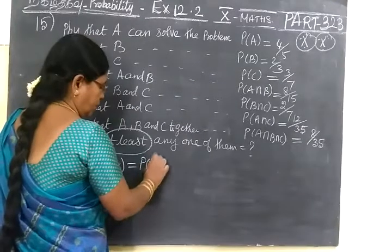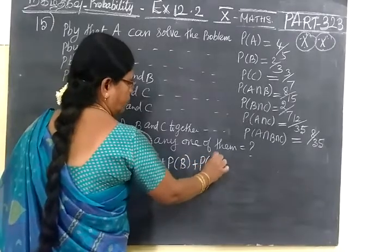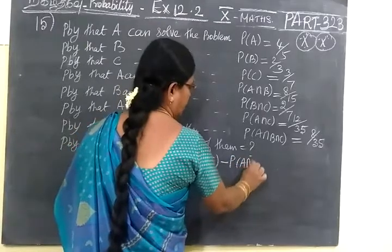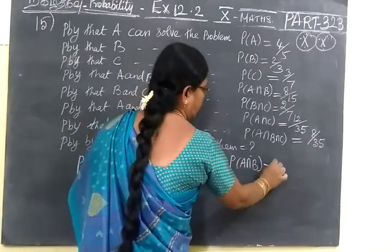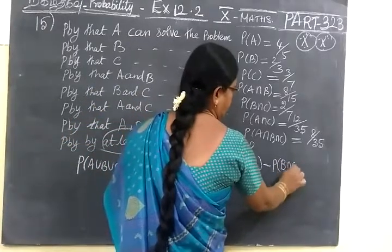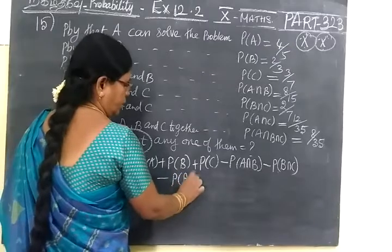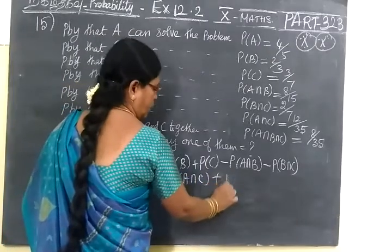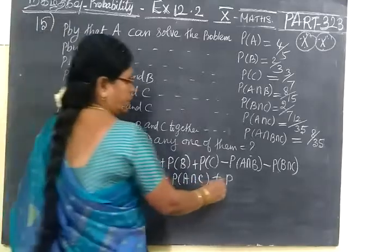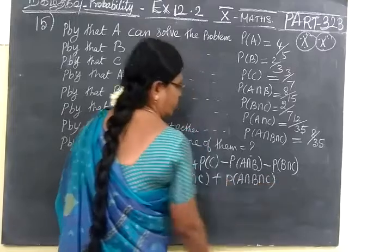P of A plus P of B plus P of C minus P of A intersection B minus P of B intersection C, then minus P of A intersection C. Last one plus, not minus. Plus A intersection B intersection C.